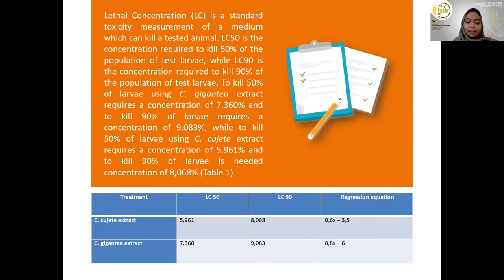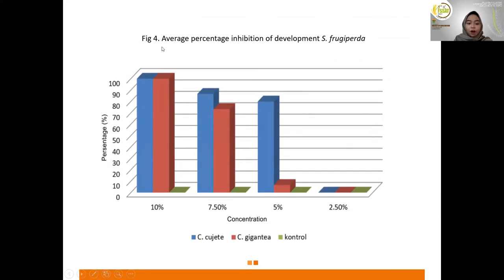Lethal concentration is a standard toxicity measurement that determines the concentration needed to kill a test animal. To kill 50% of larvae using C. gigantea extract requires a concentration of 7.36%, and to kill 90% of larvae requires a concentration of 9.08%. To kill 50% of larvae using C. dujete extract requires a concentration of 5.96%, and to kill 90% of larvae requires a concentration of 8.06%.